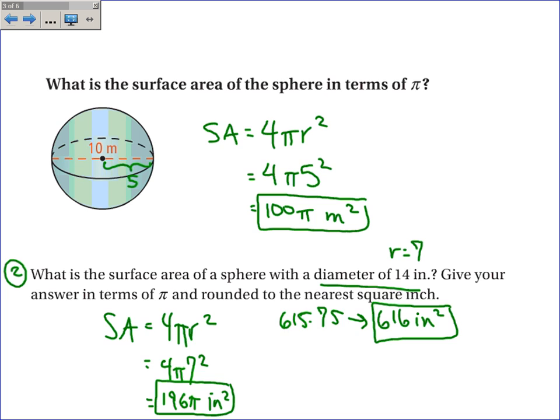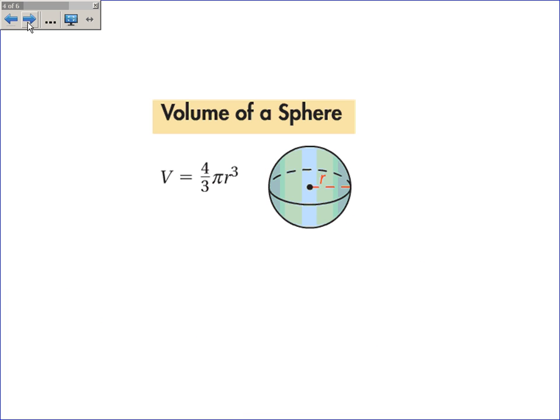Okay, I hope that makes sense. The volume of a sphere. Now, the volume of a sphere is 4 thirds pi r cubed. We don't have time in this video to discuss why that is. But the book goes into detail about filling it up with pyramids, which is really cool. But we don't have time for it in this video.